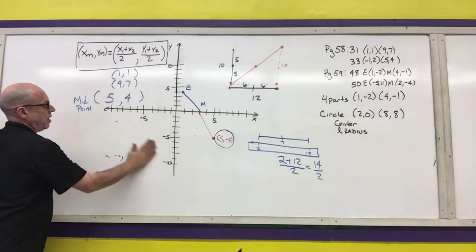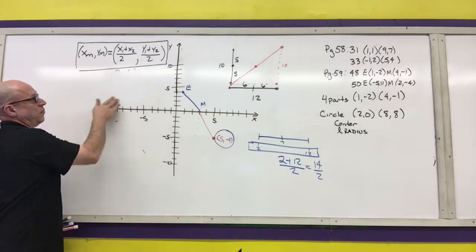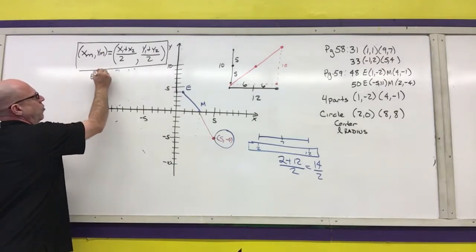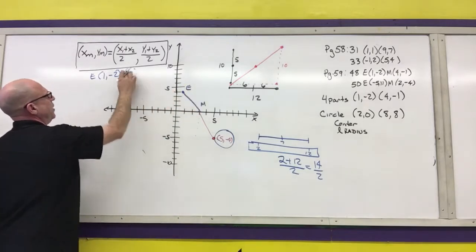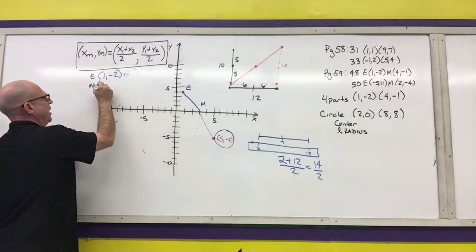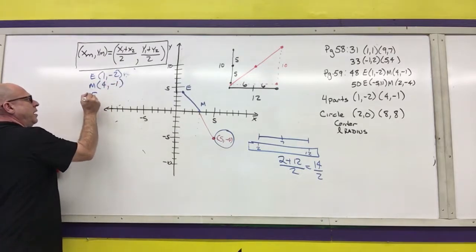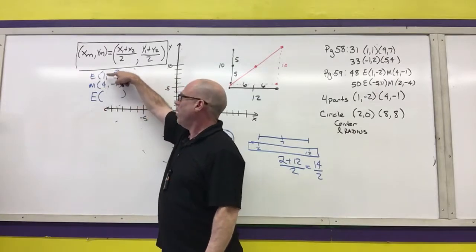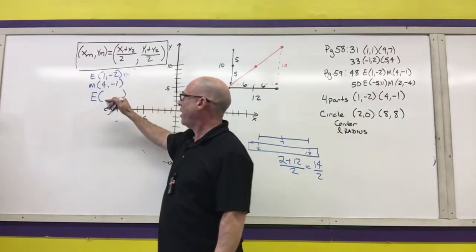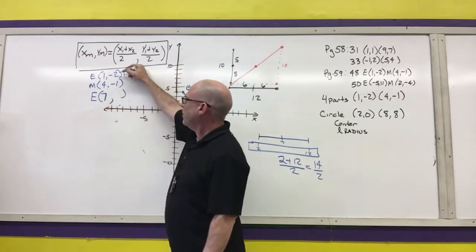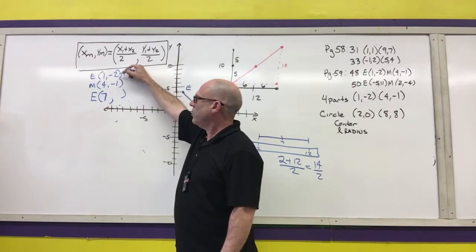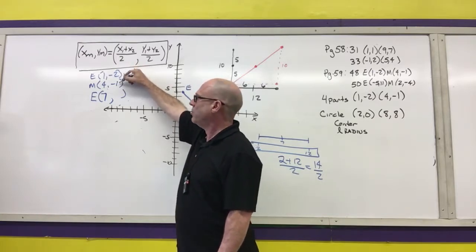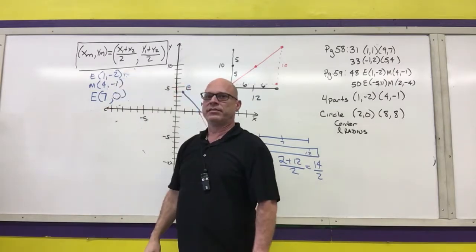When working with just the numbers, I set it up the same way. For problem 48 on page 59, they give me an endpoint at (1, -2) and a midpoint at (4, -1), and I want to find the other endpoint. I ask myself: what did I have to add to get from 1 to 4? I added 3. So to get to my other endpoint, I add 3 more, giving me 7. To go from -2 to -1, I added 1. So I add 1 more, giving me 0. The other endpoint is at (7, 0).